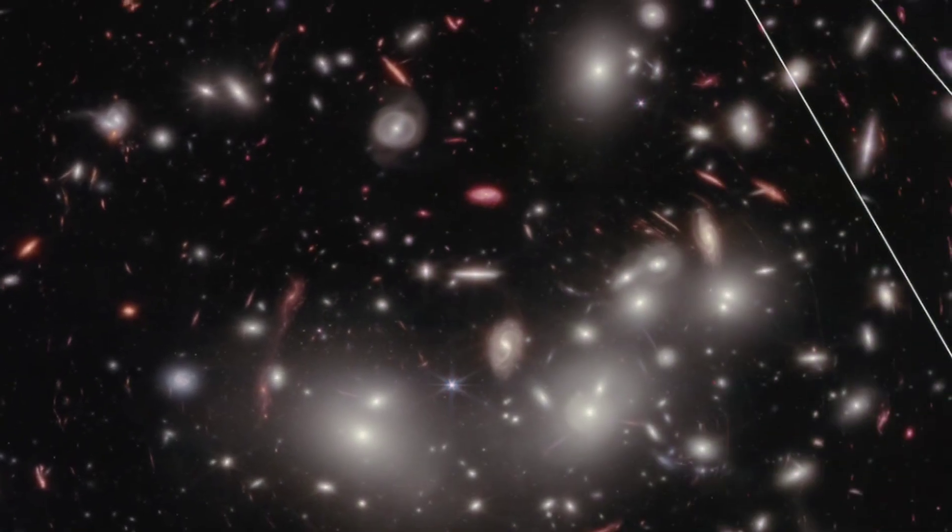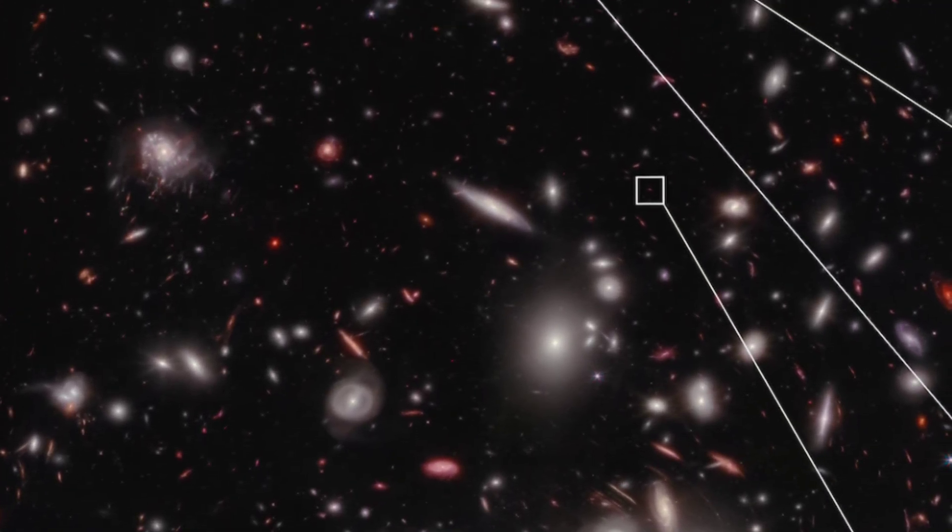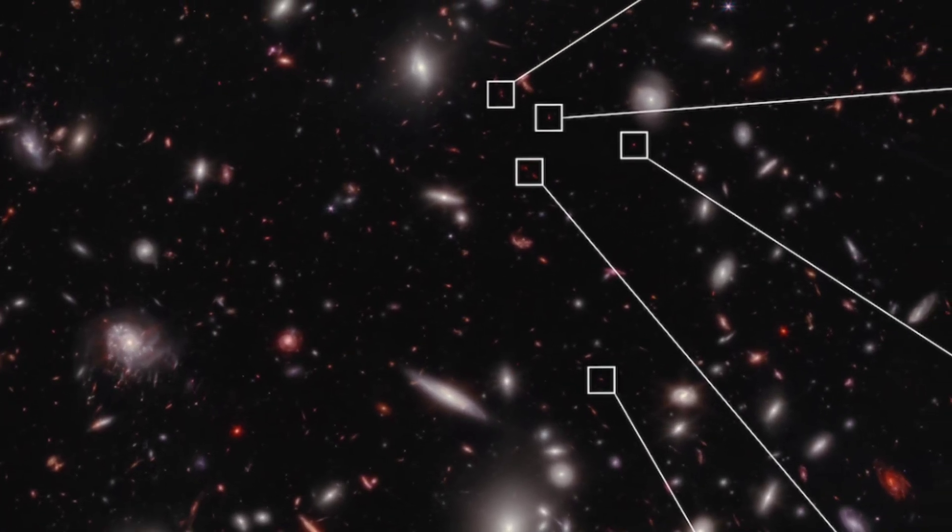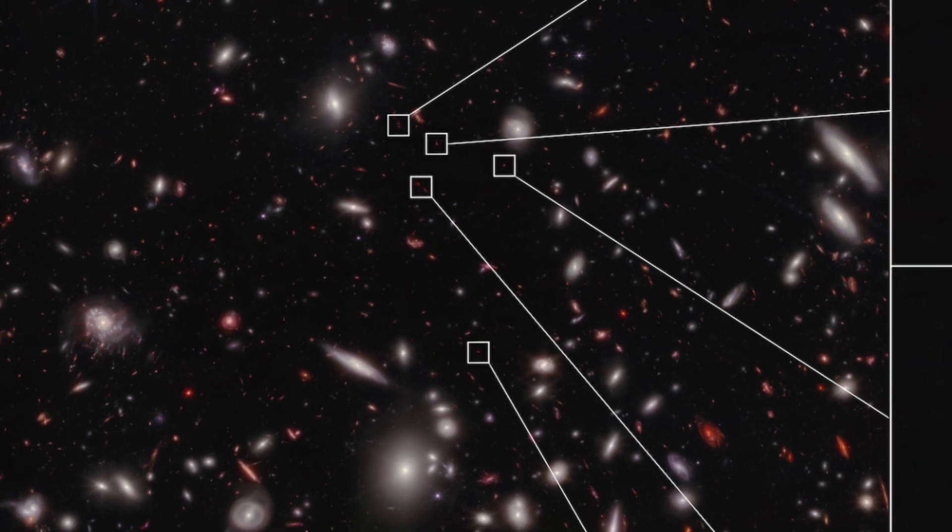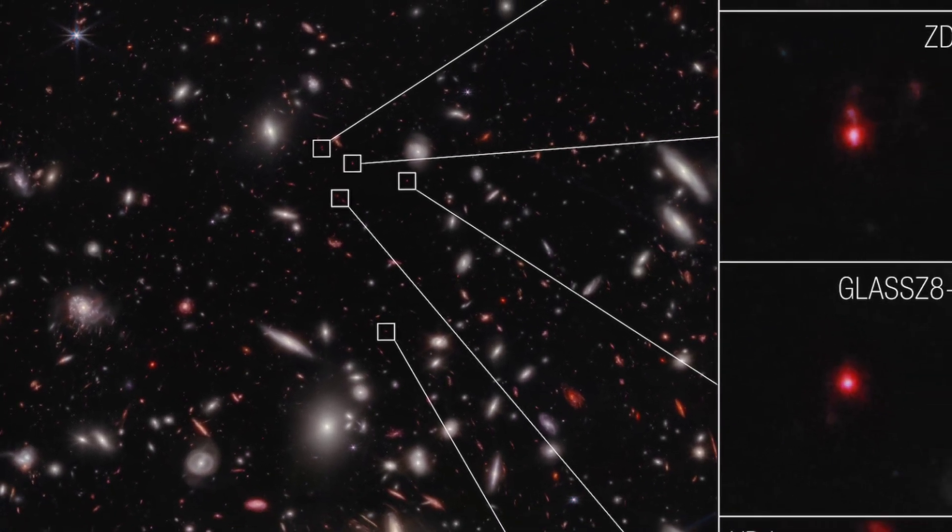The Webb Telescope has recently discovered a large number of objects massive in size and mass present very deep in the early universe, and scientists are saying that it seems likely that if we look deeper we will find more such objects.